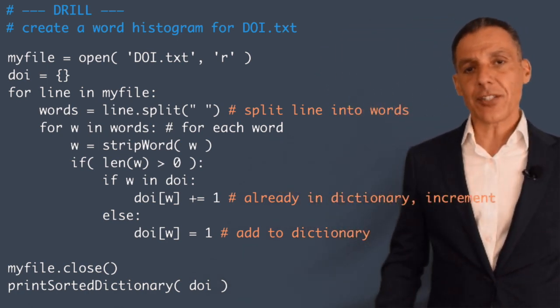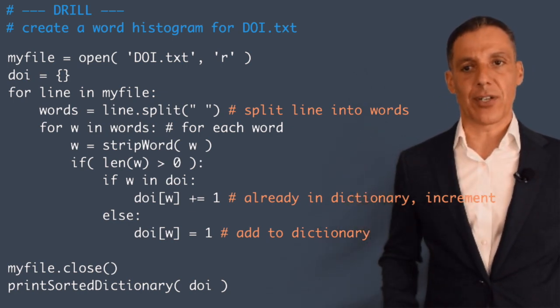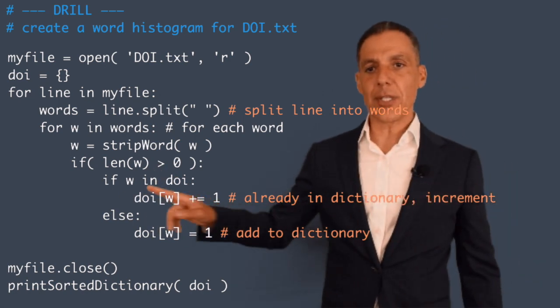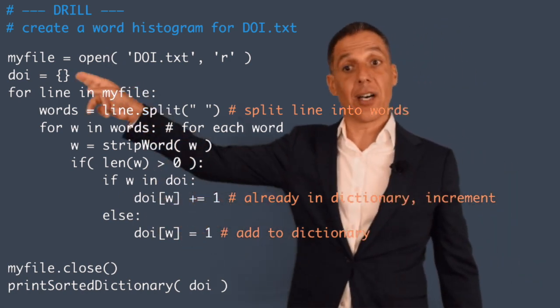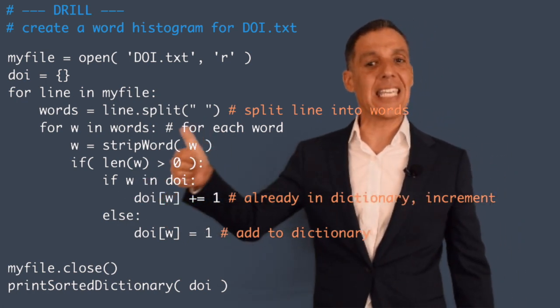Well, if it's already in the dictionary, then I want to increment the count in the dictionary. And if it's not, I want to put it in the dictionary. So if W in DOI—DOI is the dictionary that I just initialized—remember this 'in' notation. W is the key.